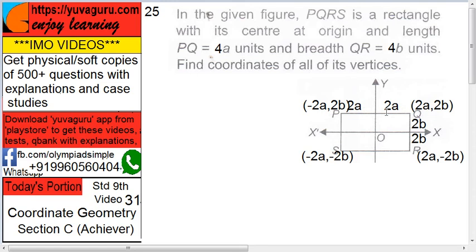So it will be half — 2A, 2B. So this coordinate will be (2A, 2B), this will be (2A, -2B), this will be (-2A, 2B), and this will be (-2A, -2B). It's simple, you can solve it yourself.